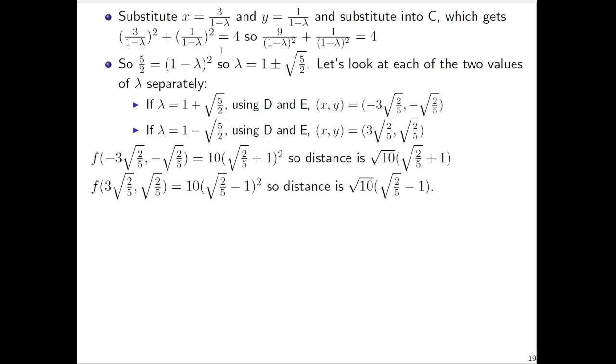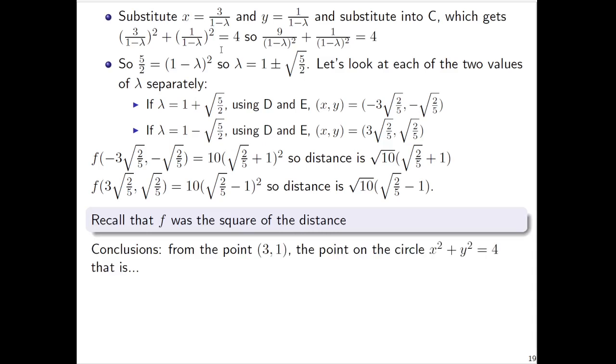So these are the only two distances that we have. We should conclude from the point (3,1), if we're only examining points on the circle x² + y² = 4, then the furthest point is...